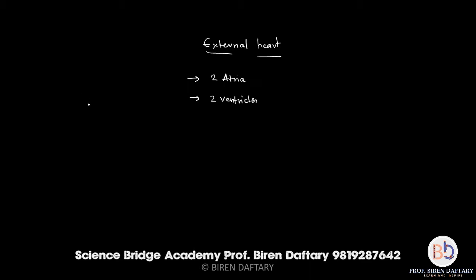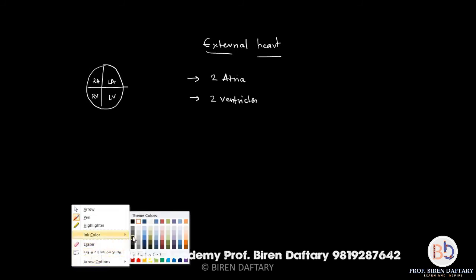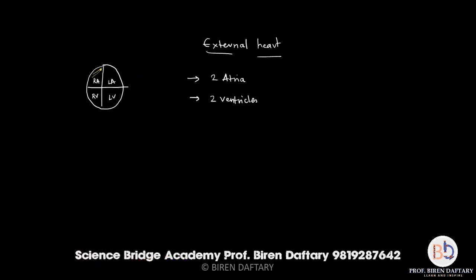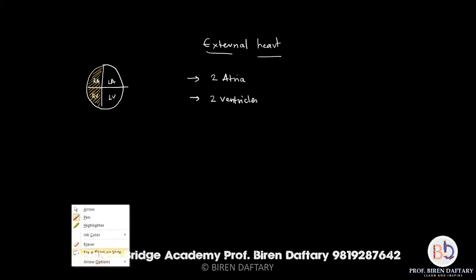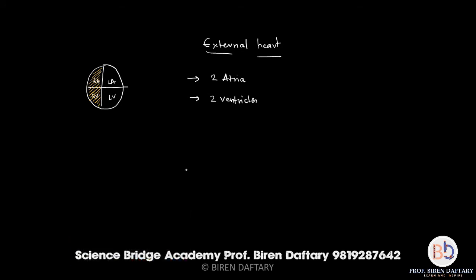The left side is concerned with the transport of oxygenated blood. If I draw a simple diagram, suppose this is the heart with four chambers — right atrium, left atrium, right ventricle, and left ventricle — the portion shaded in yellow is concerned with deoxygenated blood, whereas the portion shaded in green is concerned with oxygenated blood. Let's summarize what we learned in the last video lecture.